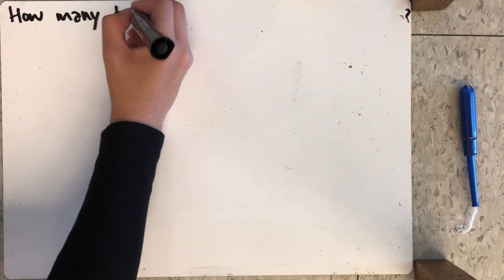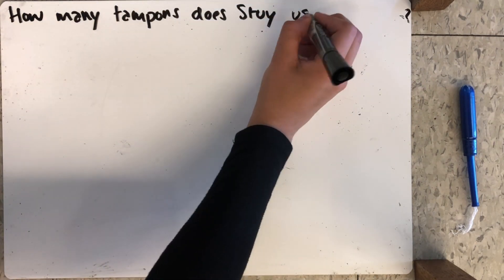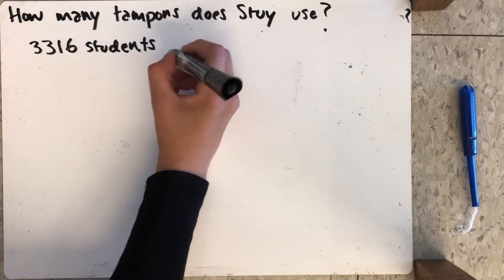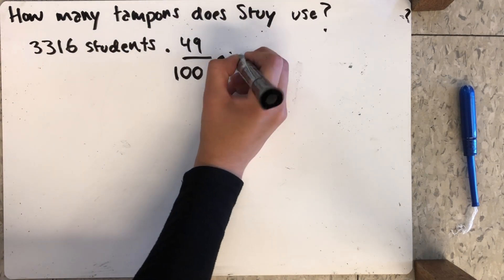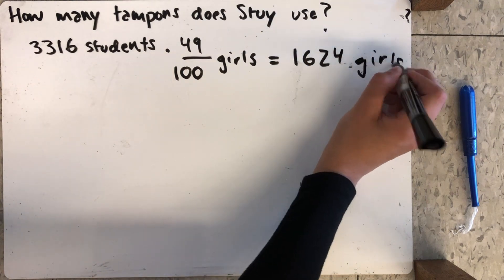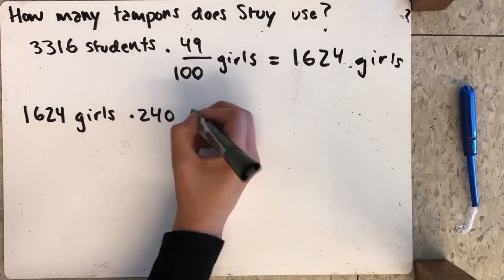What about the women at Stuyvesant? Stuy has 3,316 students. Of these students, 49% are girls. So we found that 1,624 students are girls.